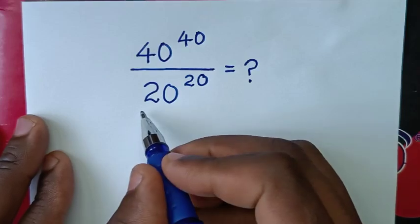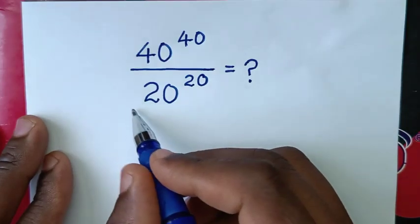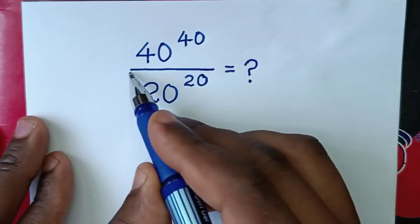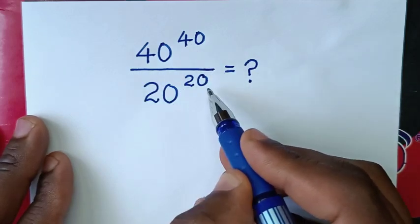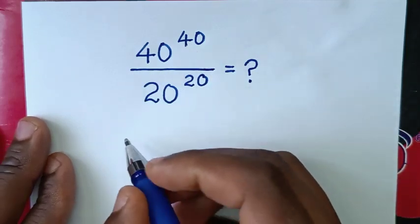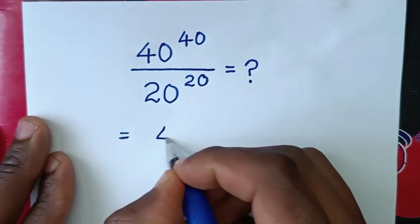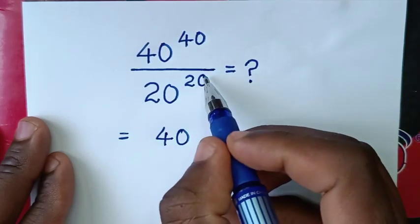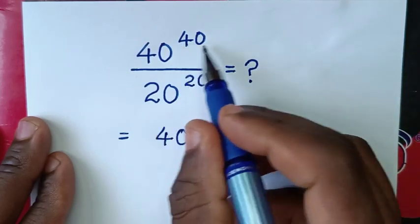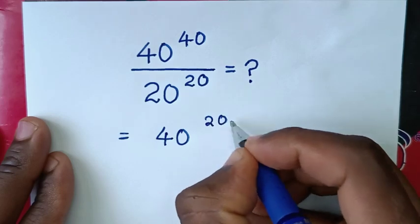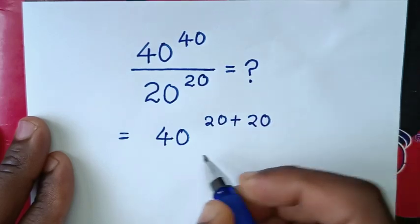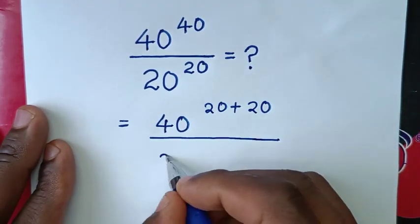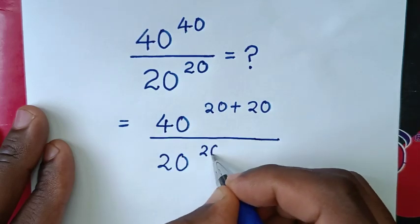Welcome, let's solve this math problem: 40 power of 40 over 20 power of 20. To begin, we rewrite 40 power of 40 — since we want a common power of 20, we note that 40 is the same as 20 plus 20. So we have 40 power of (20 plus 20) in the numerator, over 20 power of 20 in the denominator.